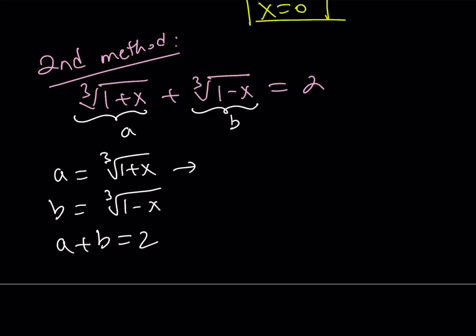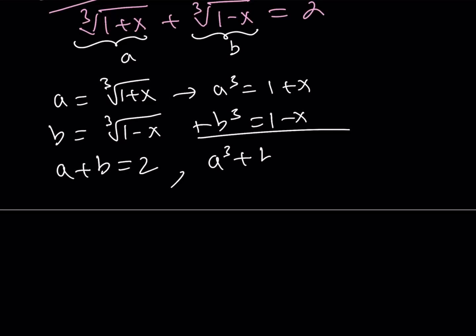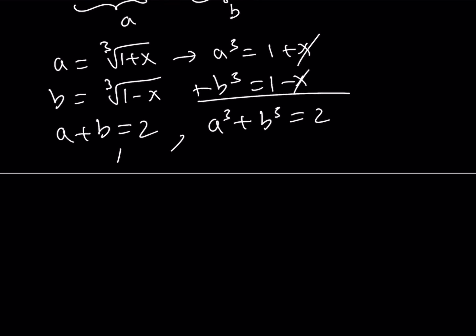But not only that, if you cube both of these, A³ becomes 1 plus x and B³ becomes 1 minus x. And when you add those two equations, you get A³ + B³ equals 2, because the x cancels out. So, now we have a system.